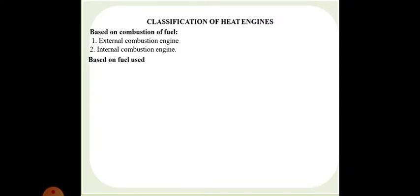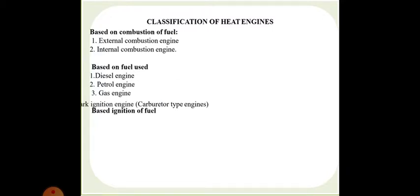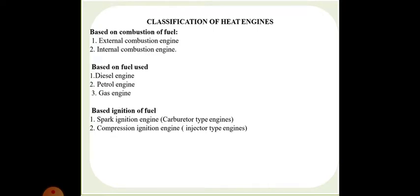The second category is based on the fuel used. Basically, we use a diesel engine, a petrol engine, or a gas engine. Then come engines based on the ignition of fuel. On this basis, there is a spark ignition engine, also called a carburetor type engine, and the compression ignition engine, termed the injector type engine.